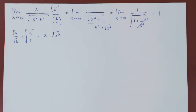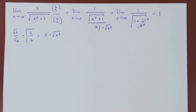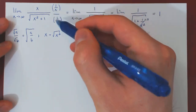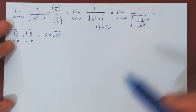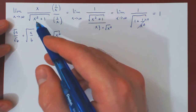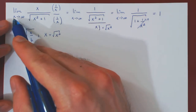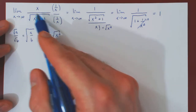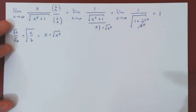This is an example of an elementary limit tackled with an elementary technique, giving us a one-line solution. Now, as we have an infinity over infinity case when x tends to infinity, let's see what happens if we blindly apply L'Hôpital's rule and do nothing else along the way.